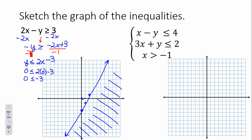Now here's where it gets interesting — this was Algebra 2 stuff, now we're in pre-calc. We are to sketch the graph of a system of inequalities: x minus y is less than or equal to 4, 3x plus y is less than or equal to 2, and x is greater than or equal to negative 1. For the first equation, put it into slope-intercept form. Dividing by negative 1 flips the inequality: y is greater than or equal to x minus 4.